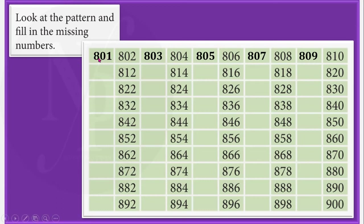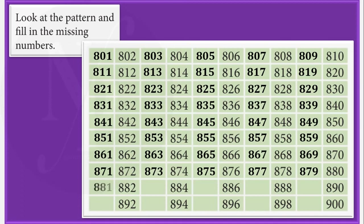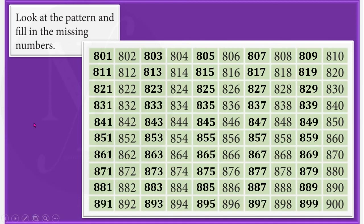As I have shown here, you also should write the appropriate numbers in the empty boxes to complete this number grid. Like this, you also should write all these numbers from 801 to 900 and complete this box.